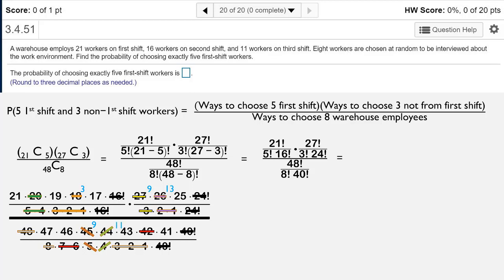So in the numerator what do we have left? Well, we have 21 times 19 times 3 times 17 times 9 times 13 times 25. And in the denominator we have 47 times 46 times 9 times 11 times 43 times 41.